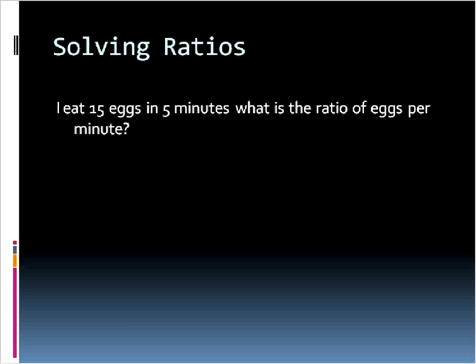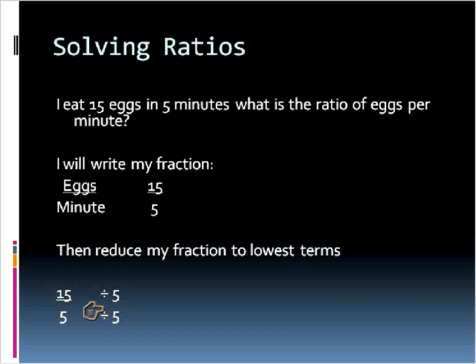We're going to look at how to actually solve ratios now. The first ratio example I have here is saying, I eat 15 eggs in five minutes. What is the ratio of eggs per minute? The first thing I'm going to do is write this as a fraction. Sometimes I write it as a fraction, and sometimes I'll write it with the colon in between. I've just chosen to use fractions this time. So I write it with eggs and minutes. Then I'll substitute in the amounts I have. I know that I have 15 eggs in five minutes. Now I have the fraction, 15 eggs per five minutes. I want to reduce that to find out how many eggs I eat in one minute. So I'm going to divide each term by five. 15 divided by five is three, and five divided by five is one.